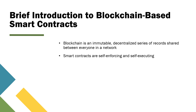The immutability aspect means that something deployed on the blockchain cannot be changed. So smart contracts that are deployed on the blockchain inherit attributes like immutability and decentralization. They let transactions execute whenever some preset conditions are met, so they're self-enforcing and self-executing. For example, a bank may want to charge an overdraft fee whenever someone's checking account balance falls to zero.